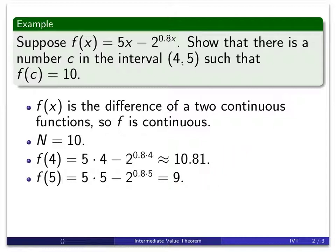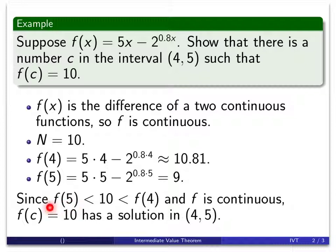So we've got all the information that we need. We have the two function values, we've shown that the function is continuous, now we just need to put the pieces of the Intermediate Value Theorem in place. Our function at 5 is 9, it's less than 10, but the function at 4 is greater than 10. Since 10 is between these two function values, and since f is continuous, there will have to be some place between 4 and 5 for which the function is equal to 10. That's the Intermediate Value Theorem. A straightforward application.